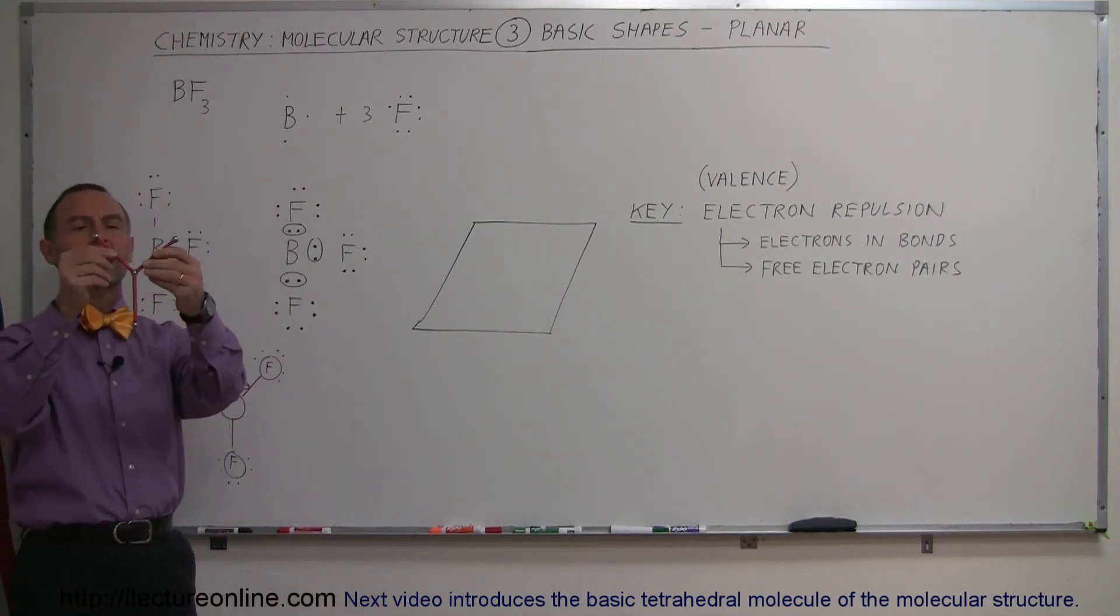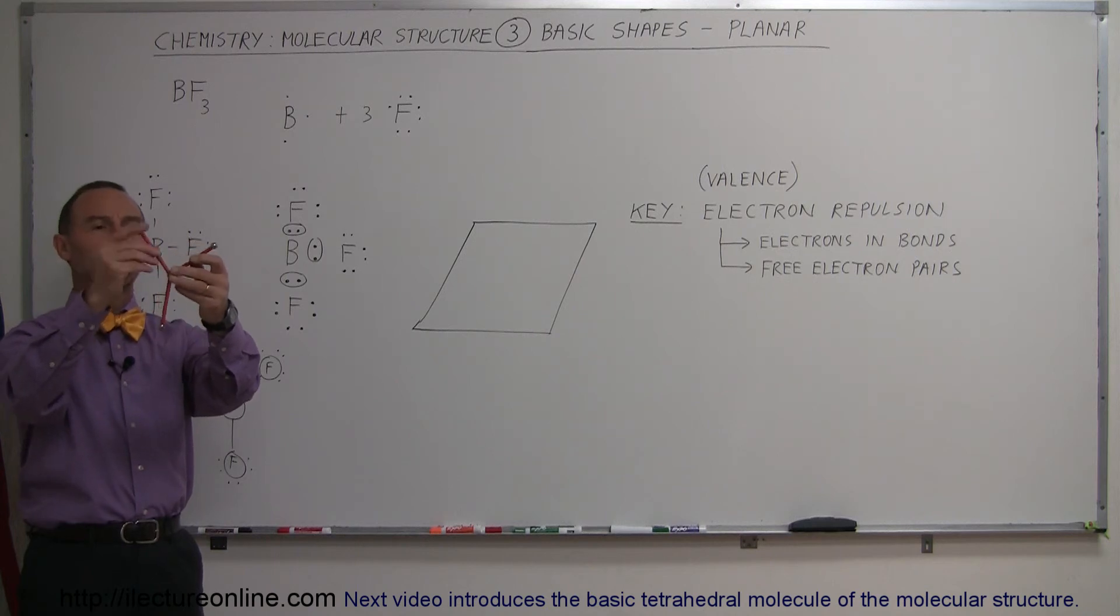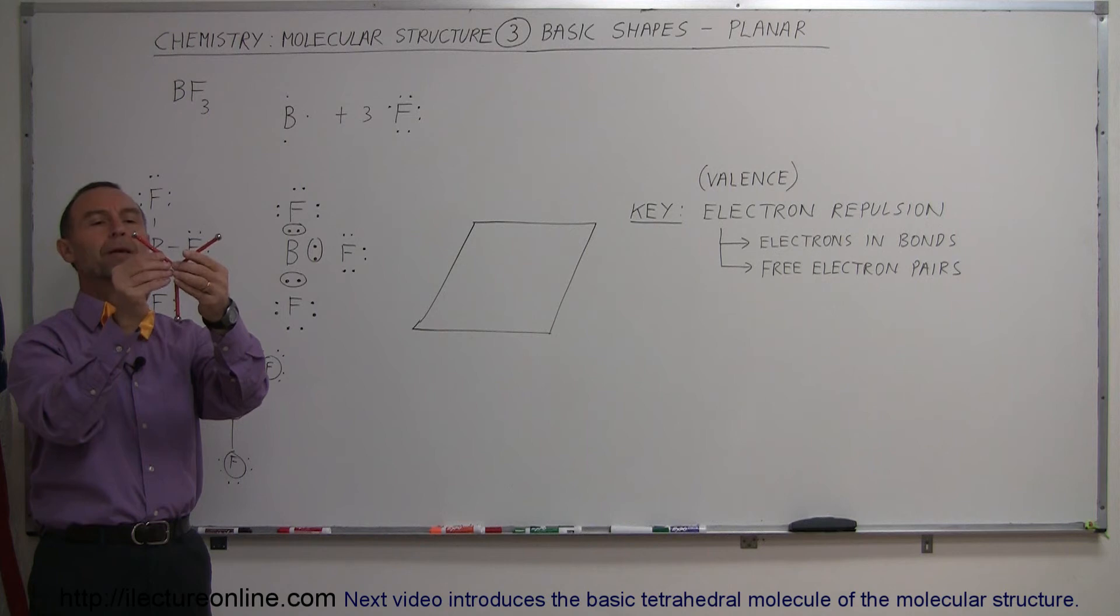So here we go that's what it should look like. We have boron in the center, three fluorine atoms like that. So the question I would be: why wouldn't they bend towards one another like that? Why would they be in a plane?